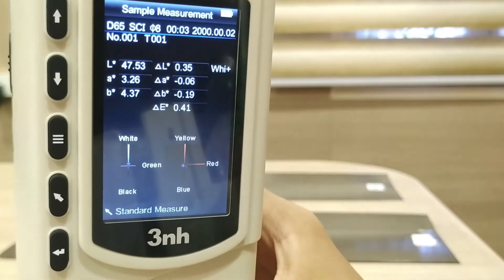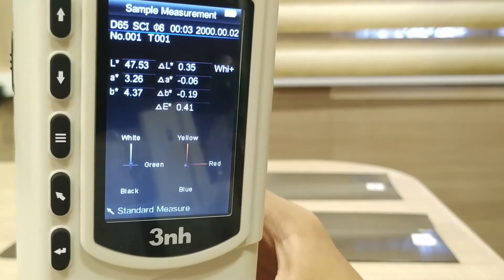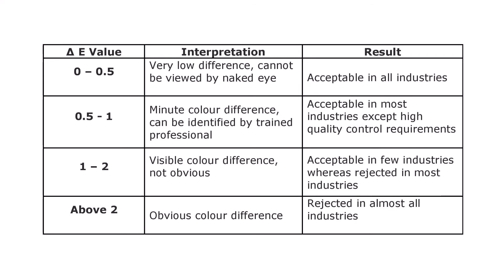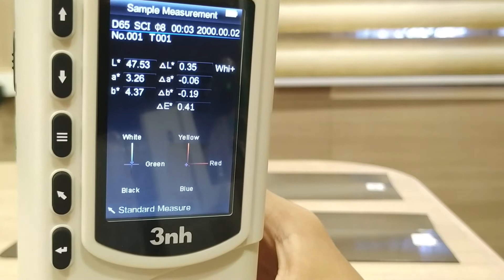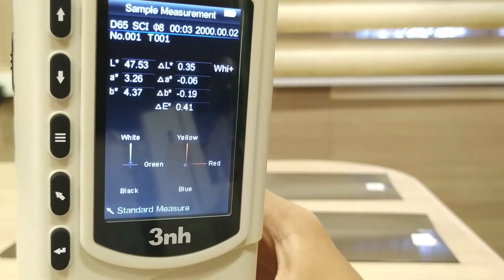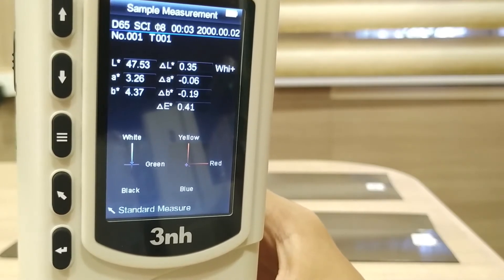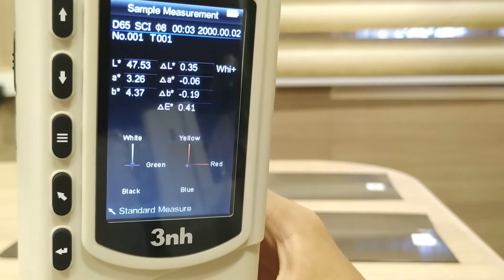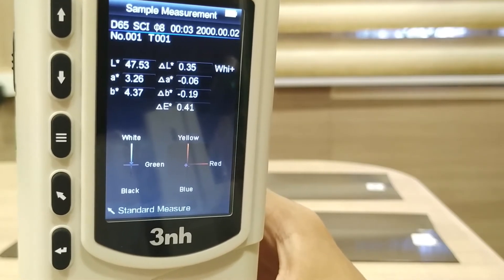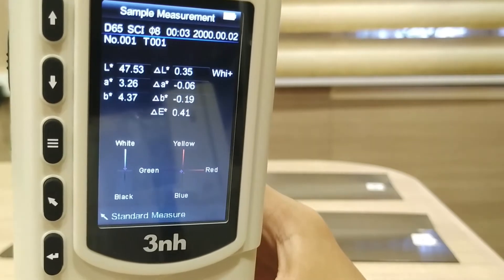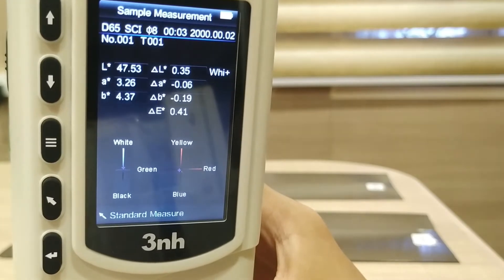Here is the table for reference. As you can see, a delta value of 0.41 is said to be a very low difference and is accepted in all industries. This means that our sample has passed the color test.